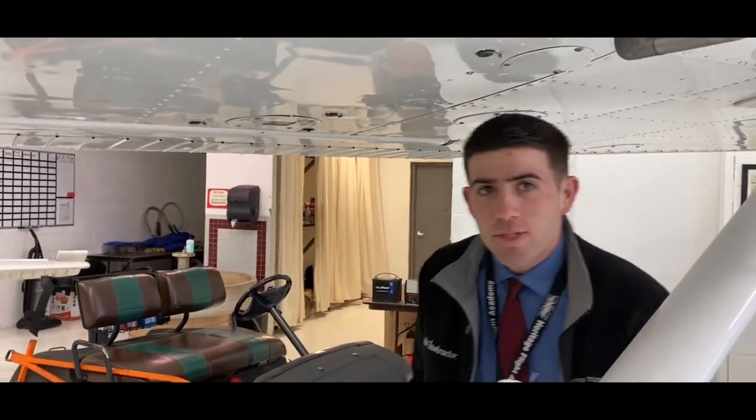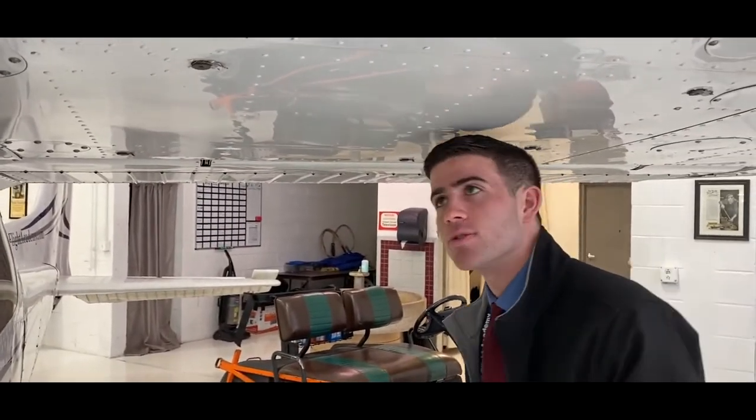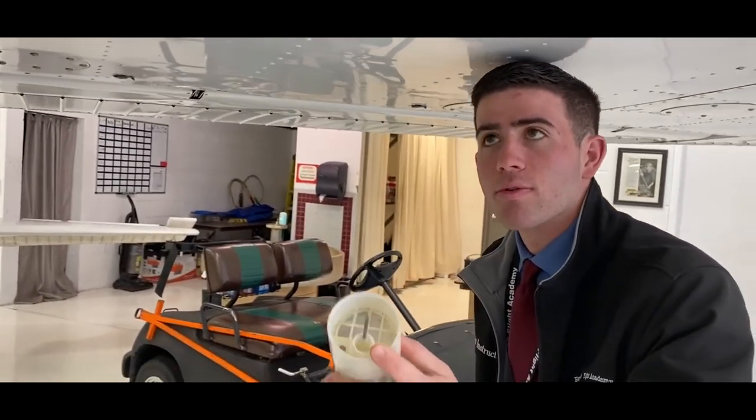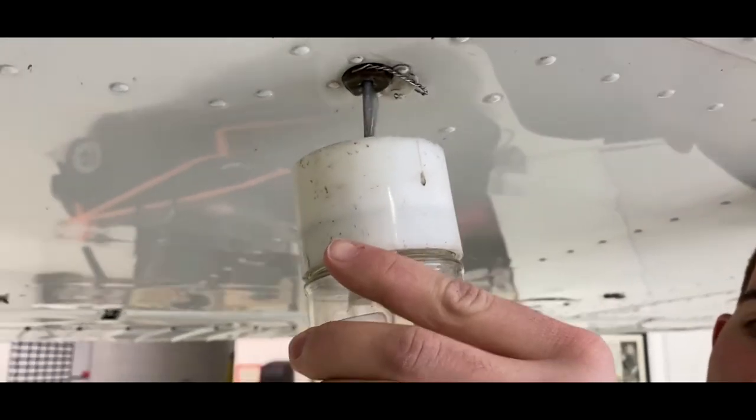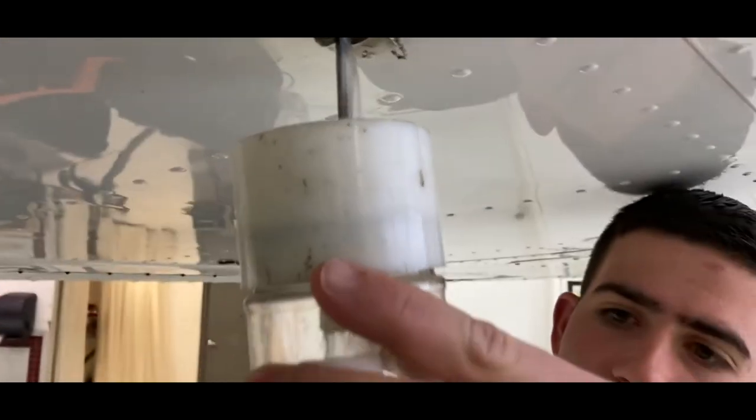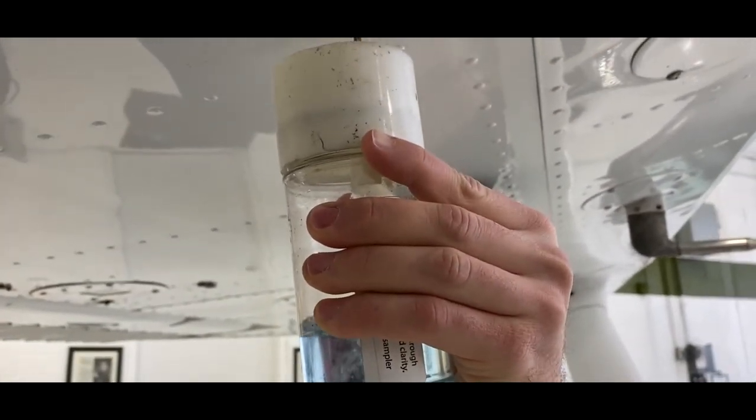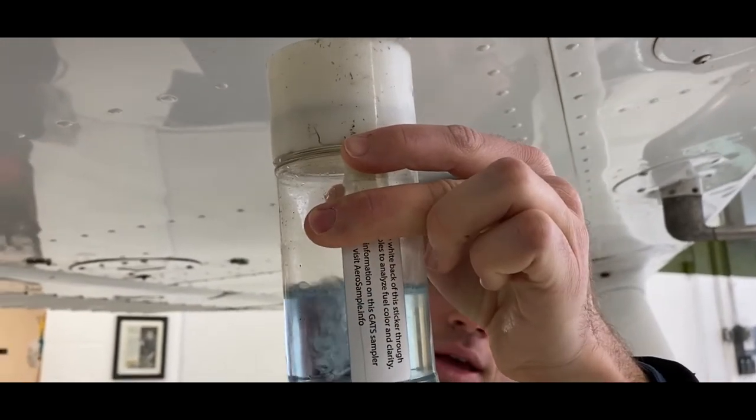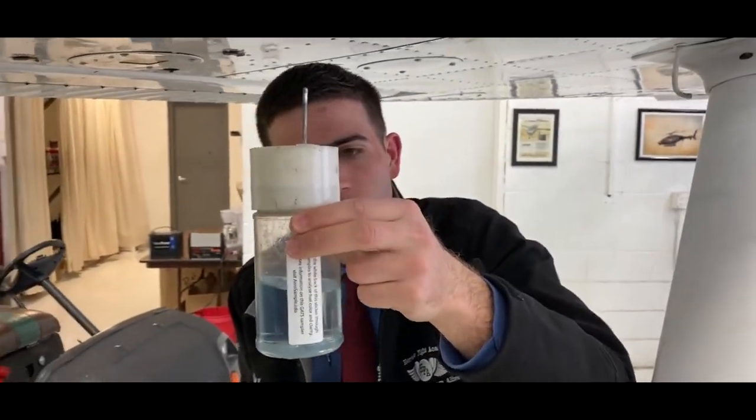All right, so this is how we sump the Cessna. There's five on each wing and then there's three on the bottom of the engine. We have one of our containers here with a little needle and you basically poke it inside here. You just let enough fuel to come in, usually for a couple seconds, but I'm going to fill it up a little bit more for this demonstration. You can see all the fuel coming into the container and we will check it under a light to make sure that there's no contaminants inside.